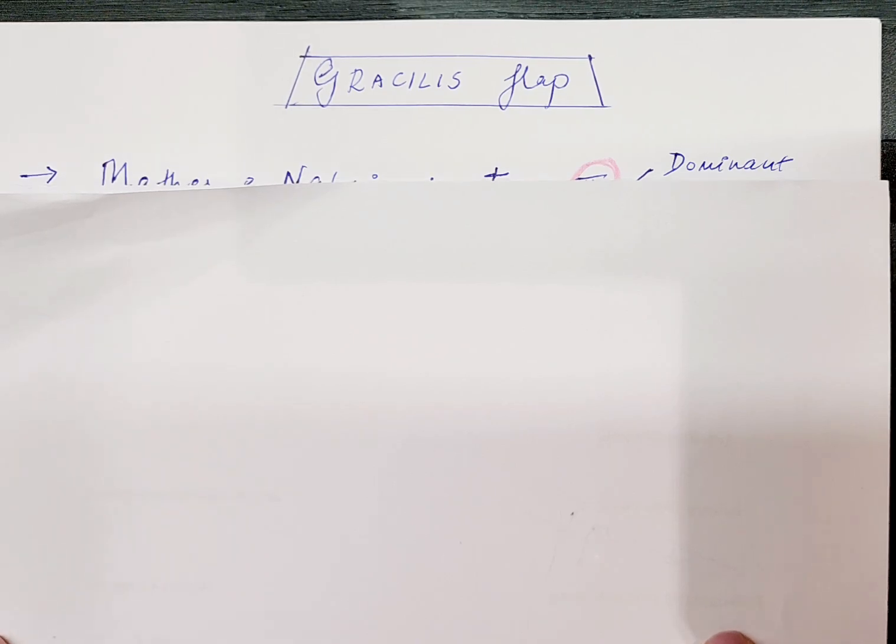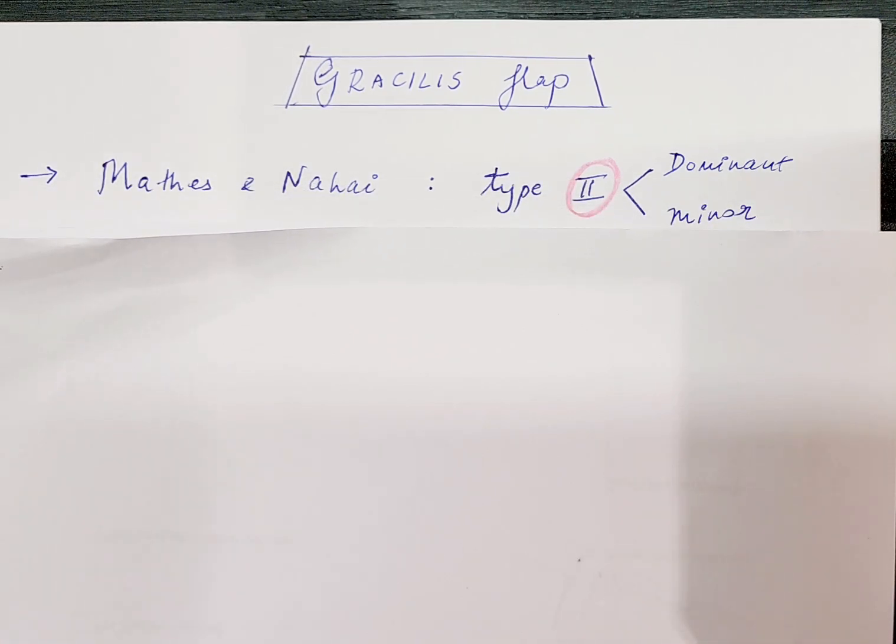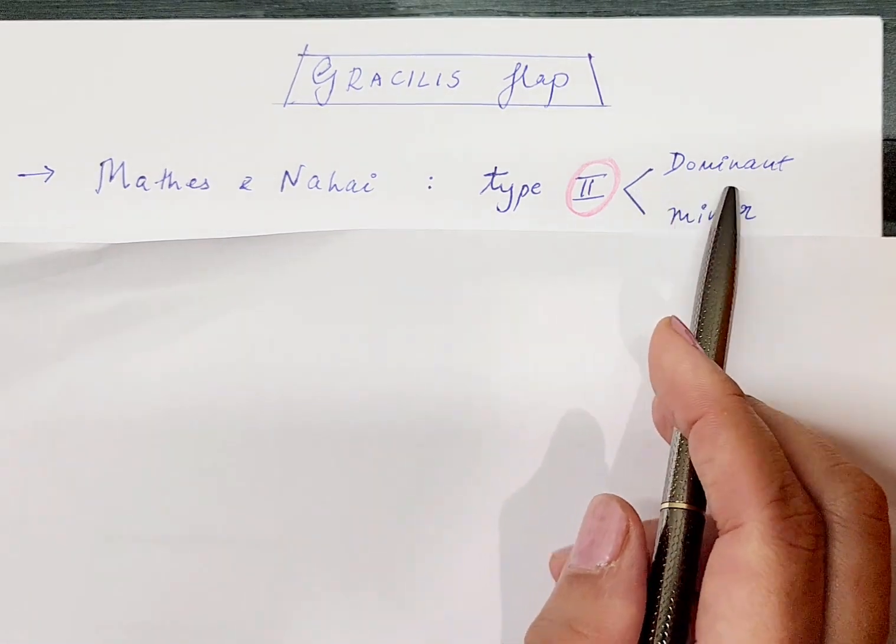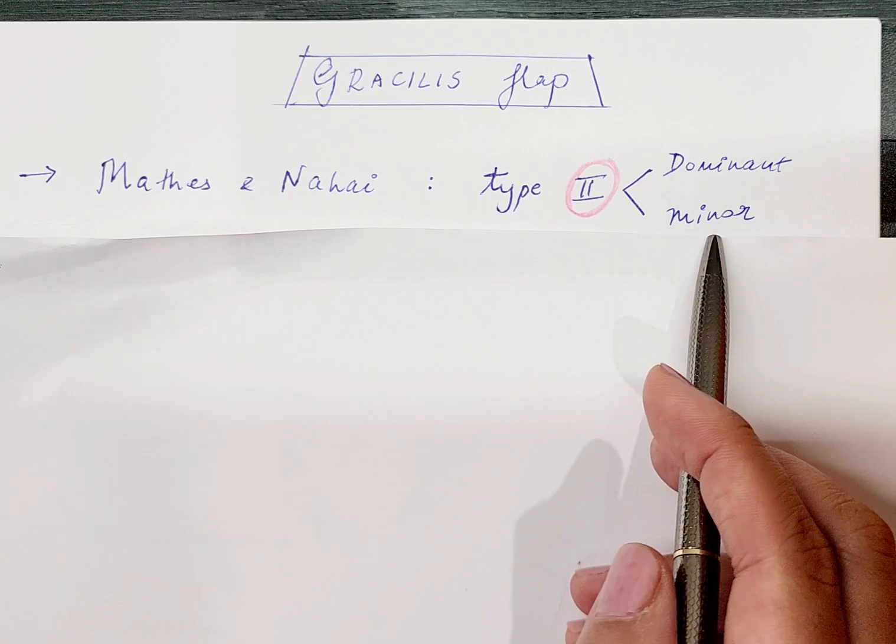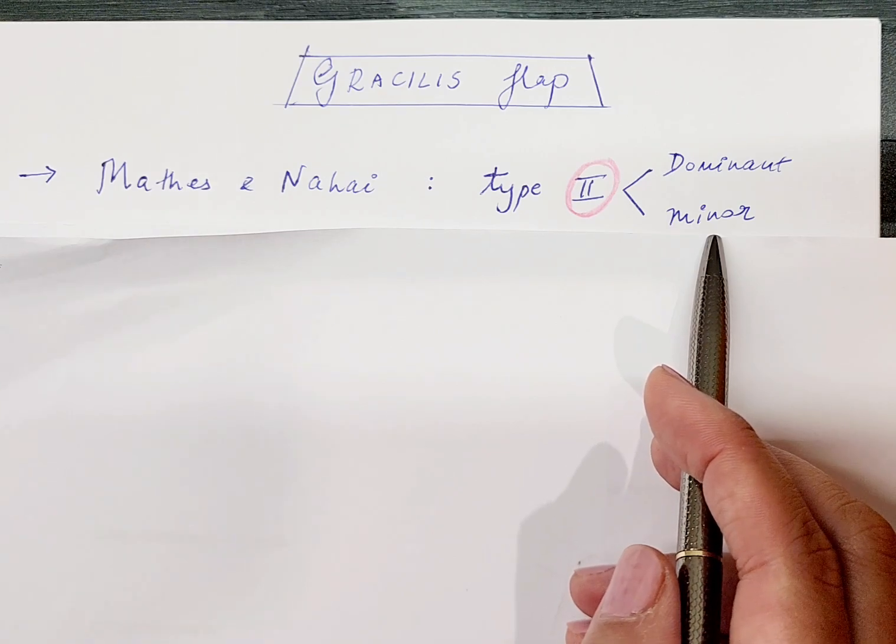First of all, according to the Mathes and Nahai classification, the gracilis flap, whether it is musculocutaneous or just the muscle alone, is a Type 2 flap. This means there is going to be a dominant pedicle of the flap along with a minor pedicle. This is very important because during dissection we must identify that we are harvesting this flap based on the dominant pedicle.